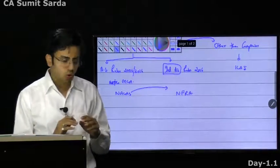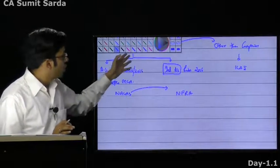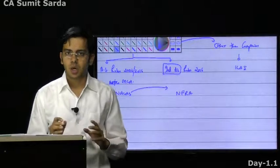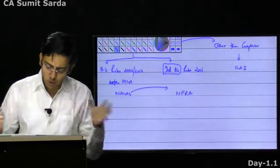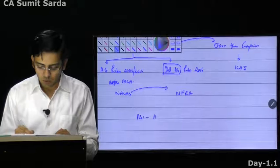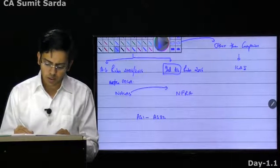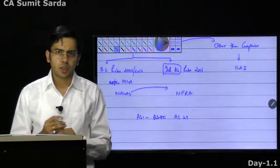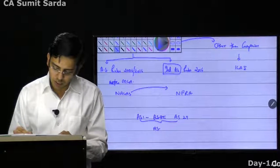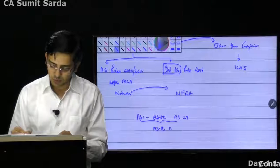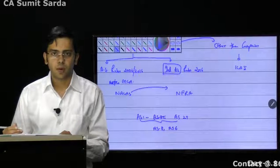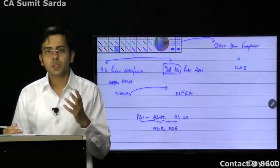Now, there are big companies who follow Indian Accounting Standards, and other than companies. How many accounting standards are there? Even in CA Inter you may have studied from AS1 up to AS32. But we cancelled certain accounting standards — we don't have AS8 or AS6 anymore. So of 29, leaving these two, we have 27 standards to study.